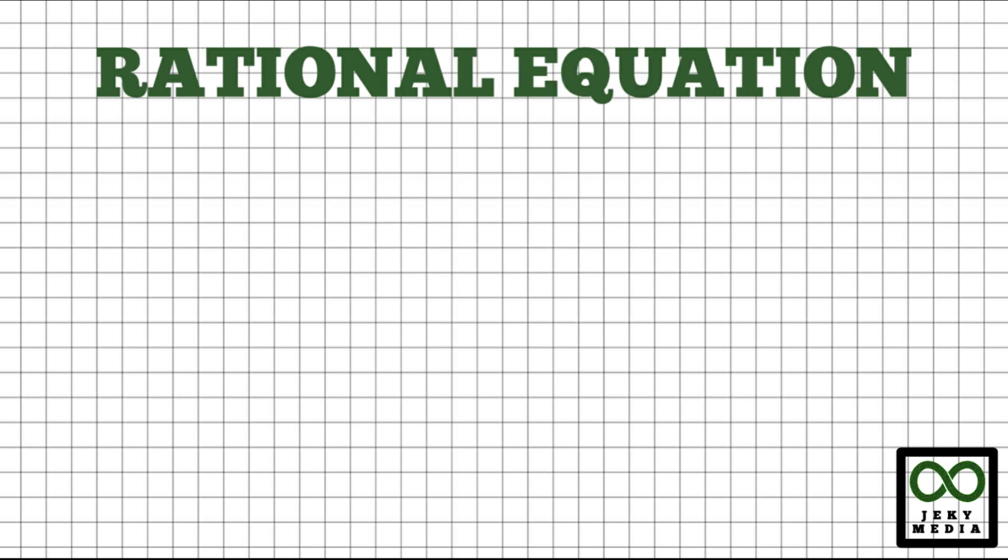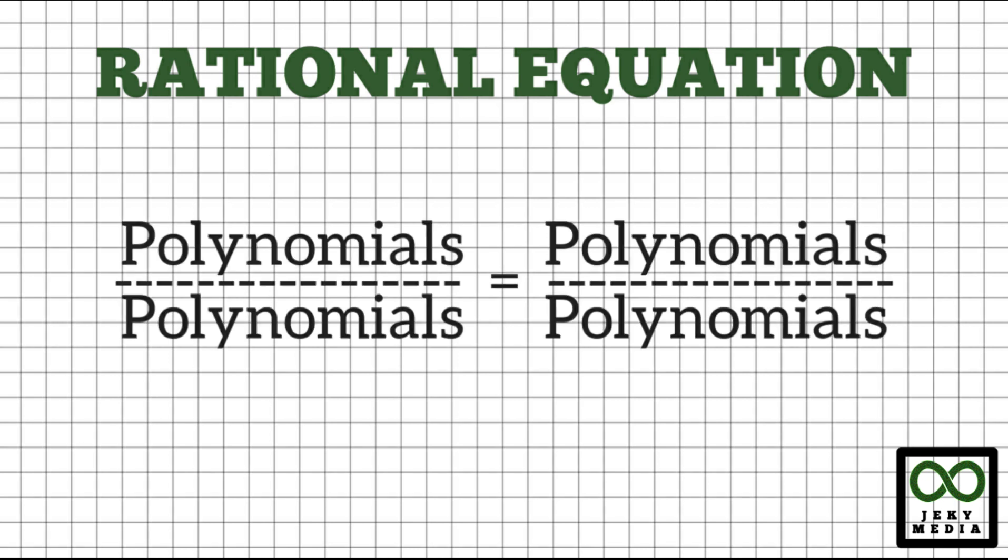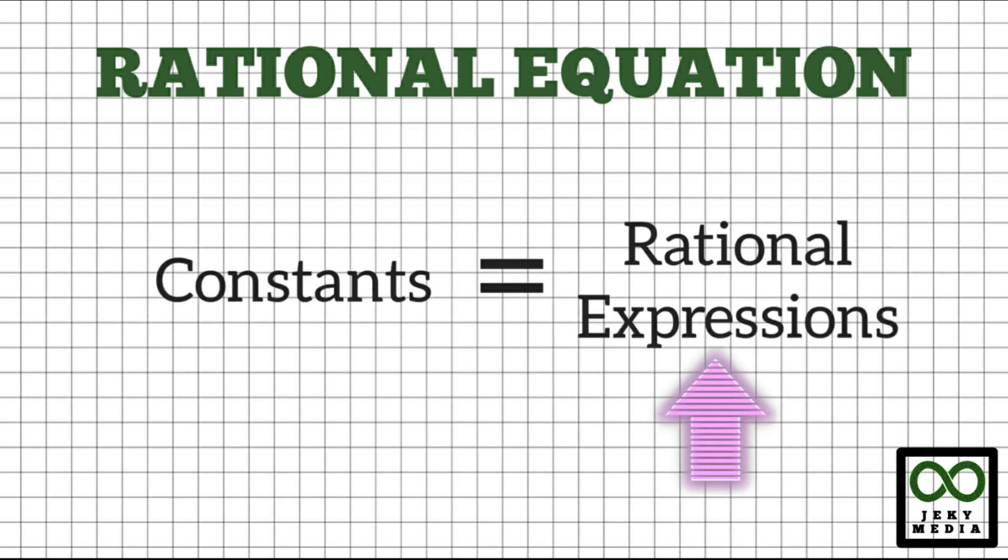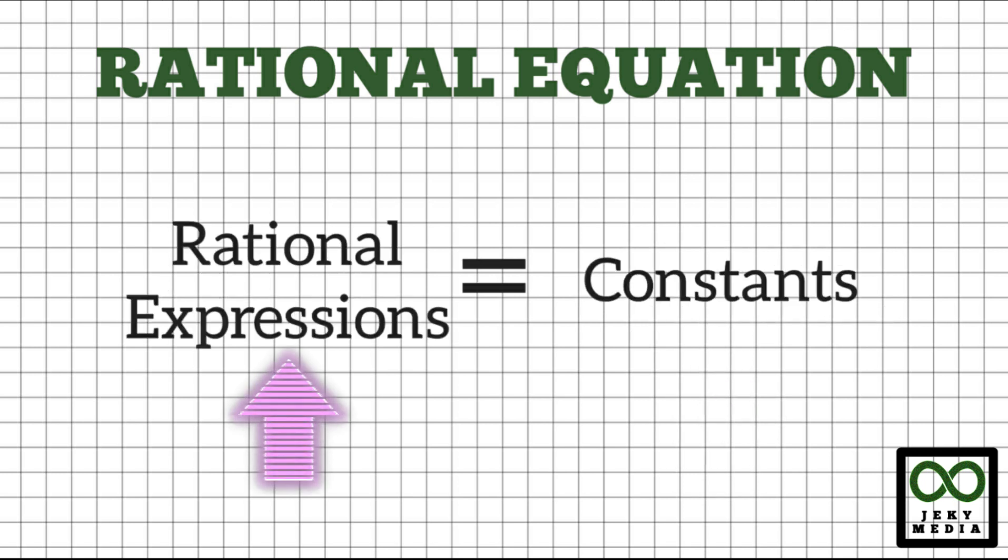Next, rational equation. We know that every equation contains an equal sign in between two expressions. Rational equation is an equation where polynomials are maybe present on both sides of the equation, or it may contain at least one rational expression. The rational expression may be on the right side of the equation. Commonly, it can be found on the left side.